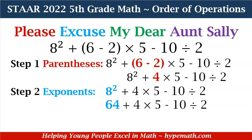Our expression will now read 8 squared plus 4 times 5 minus 10 divided by 2. Next, we have exponents. We have one exponent: 8 squared, which means 8 times 8. That is 64.